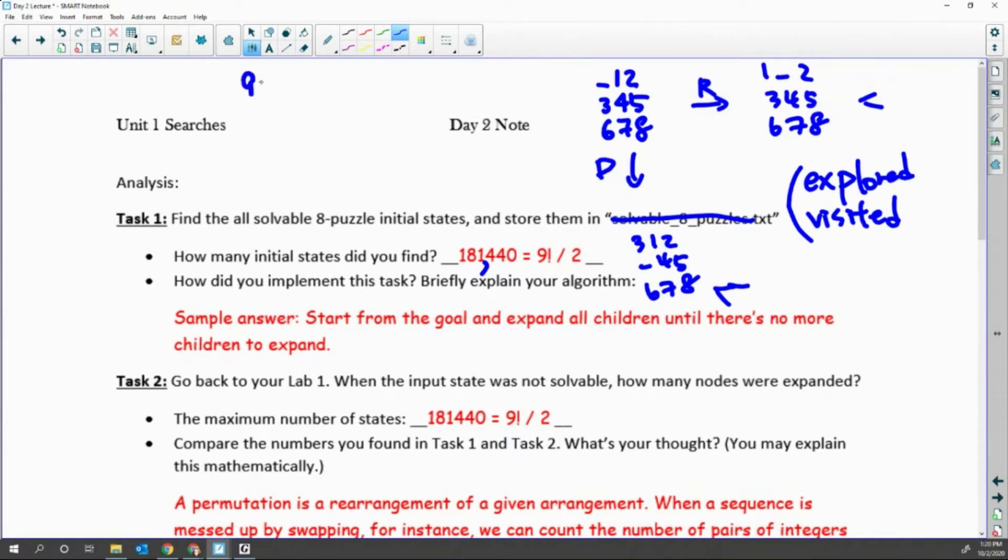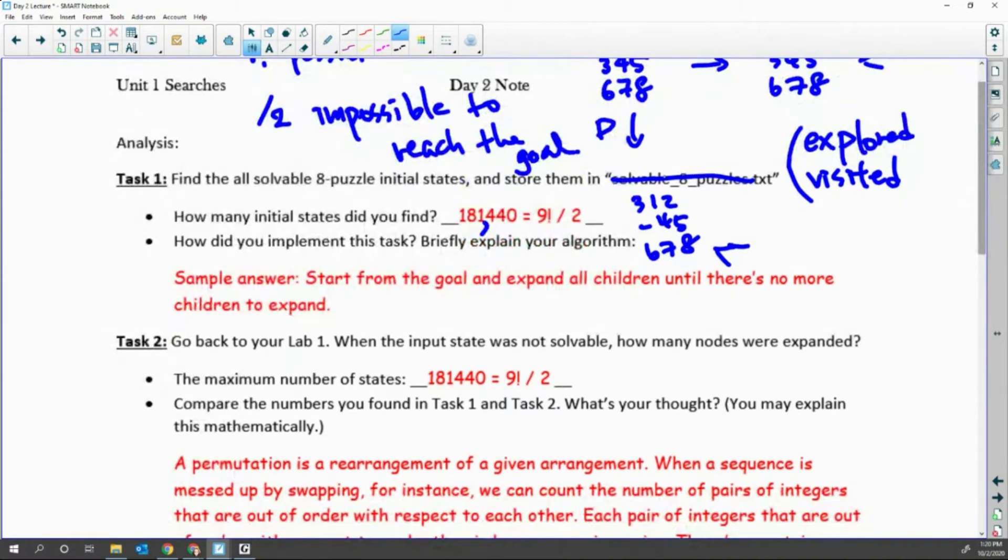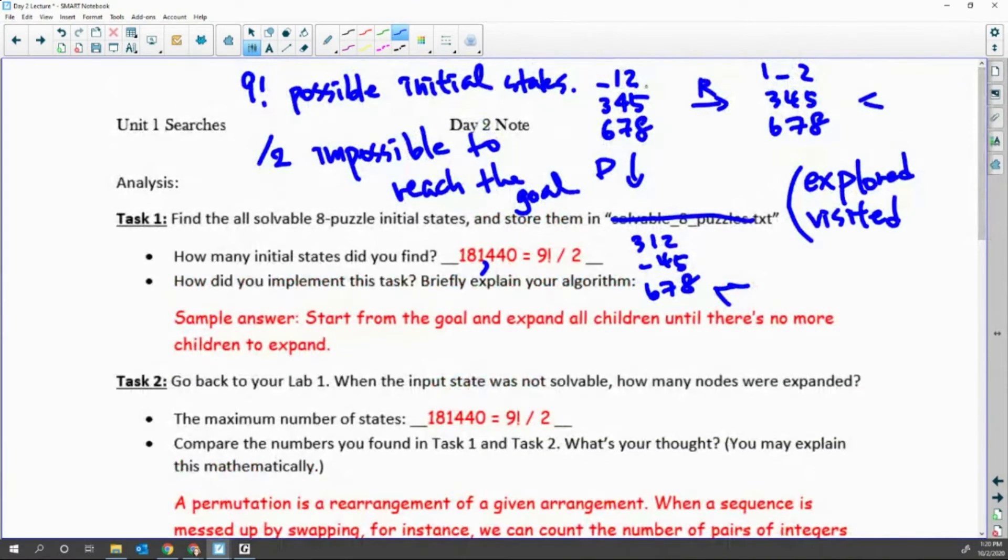Actually we are talking about, there are 9 factorial possible initial states, but half of them are impossible to solve, impossible to reach the goal. You can think about why. You know the answer first by getting the solvable 8-puzzles by tracing from the goal.